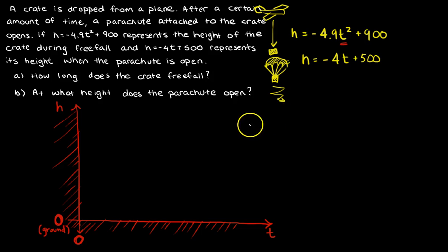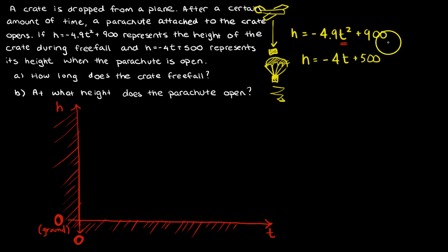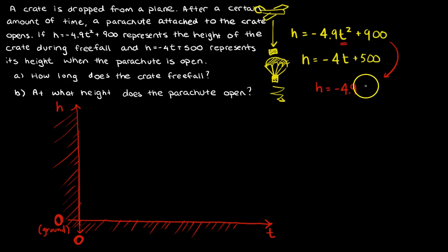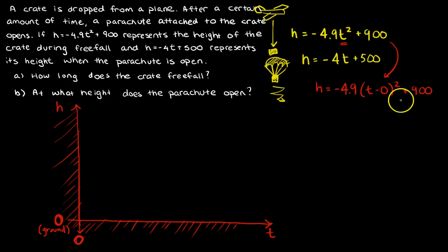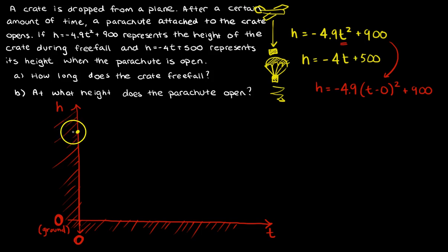The first equation is −4.9T² + 900. This is already in vertex form — it's the same as −4.9(T − 0)² + 900, so it's already written in vertex form. I know that this has a vertex right on the y-axis at 900: the point (0, 900). That's the vertex.